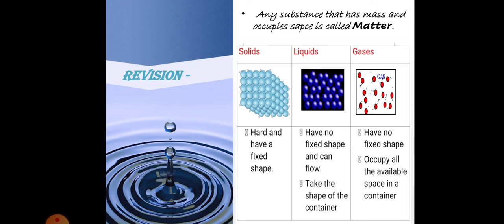Solids are substances in which the particles are packed very close to each other. Solids are usually hard and have a fixed shape. Liquids are substances in which the particles are not very closely packed. Unlike solids, they have no fixed shape and can flow.